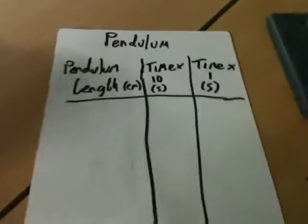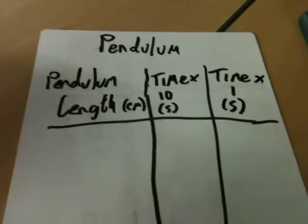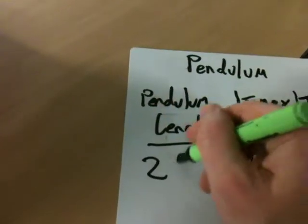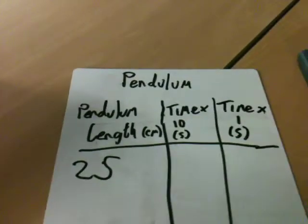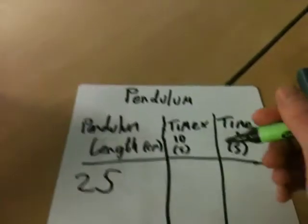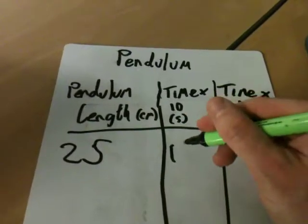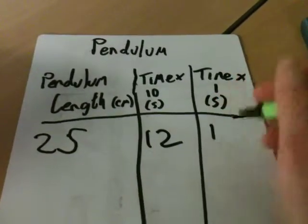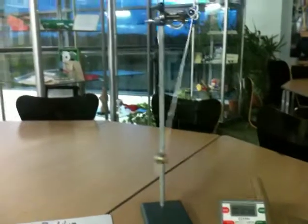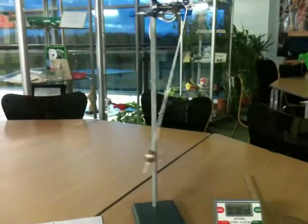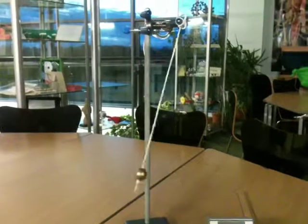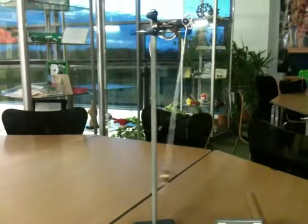What you record in your results table — for example, in a results table for pendulum length: if the pendulum length was 25 centimeters and the time taken was 12 seconds for 10 oscillations, then the time taken for one oscillation is 1.2 seconds. While carrying out the investigation, consider why timing 10 oscillations will give you a more accurate answer than timing just one oscillation. Good luck!